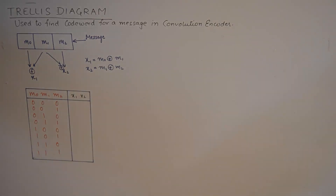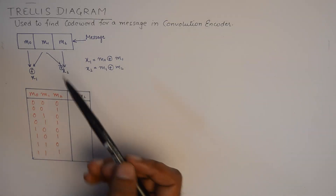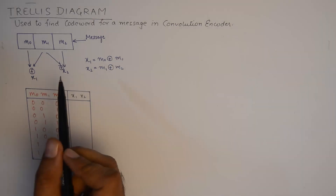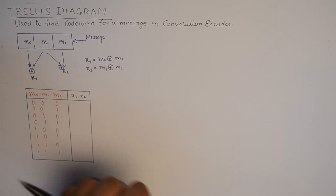Hello internet, welcome to another tutorial in information theory and coding. In today's tutorial we'll talk about the trellis diagram, which is used to find the codeword for a message in a convolutional encoder. We have a convolutional encoder here with three flip-flops — it's basically a shift register. The discussion on convolutional encoder and state transition diagram has already been done.